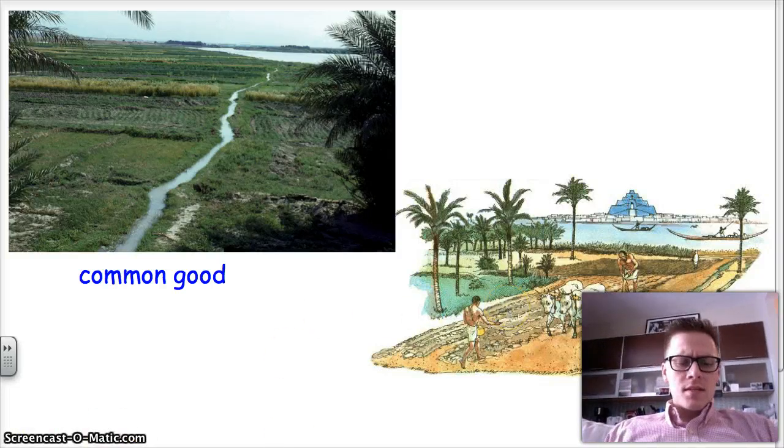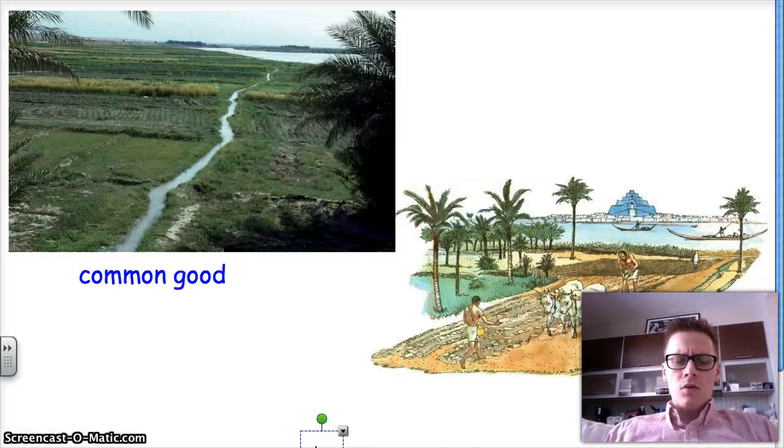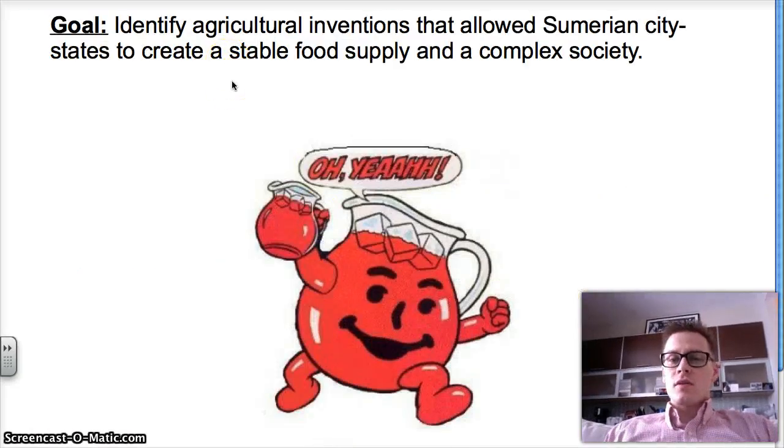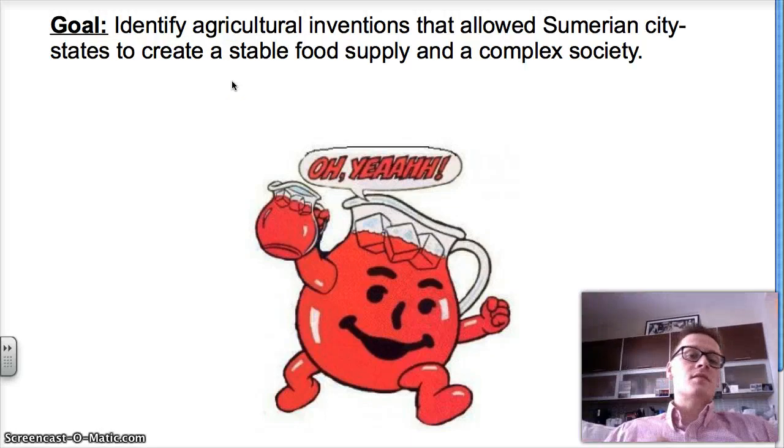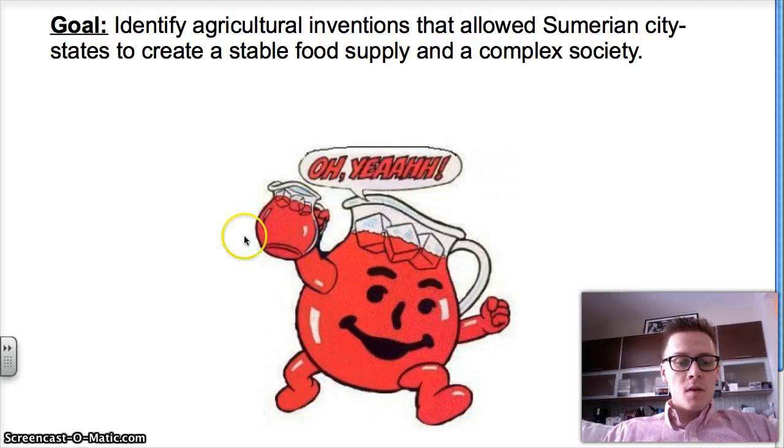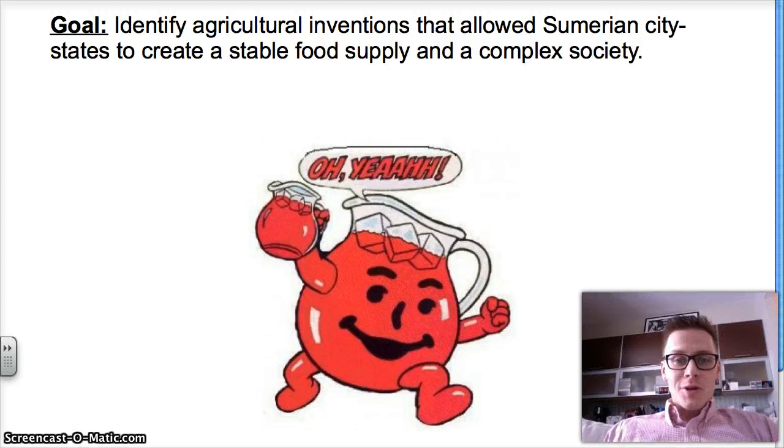So today our goal was to identify agricultural inventions that allowed Sumerian city-states to create a stable food supply and a complex society. We've got two. We've got the irrigation system and the plow. We've got the water for the Kool-Aid and we've got it stirred. I hope this was edifying. This has been World History with Mr. McCall. Take care.